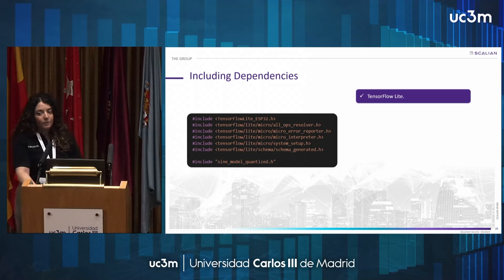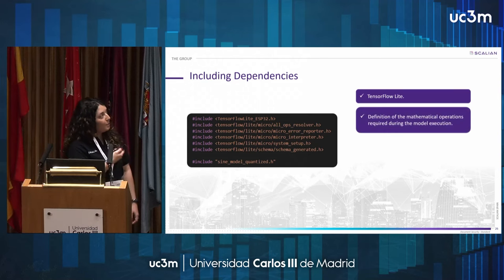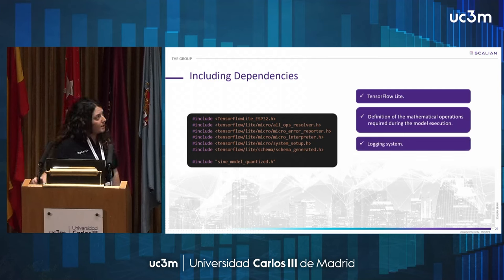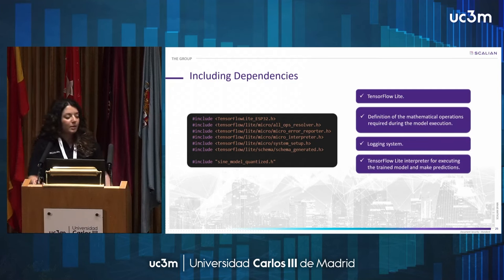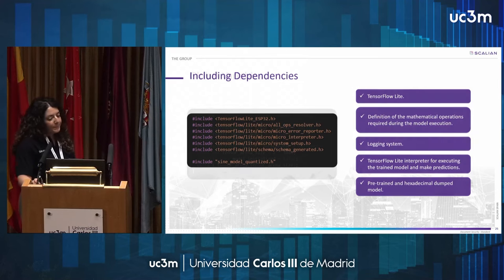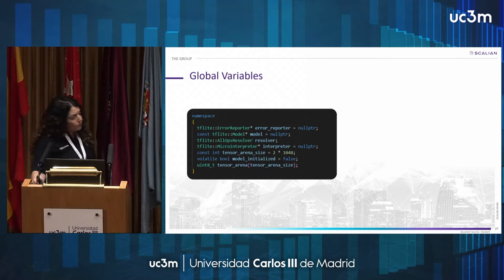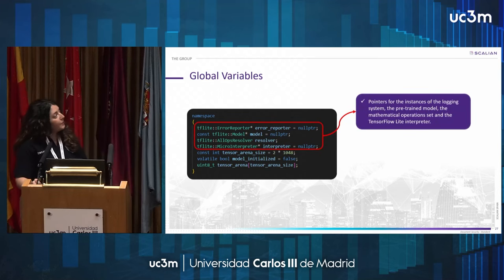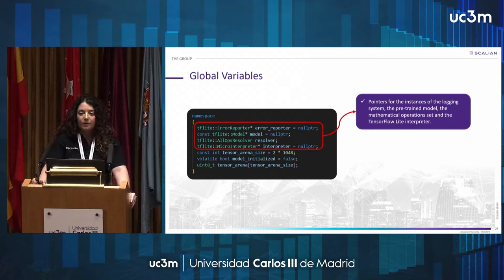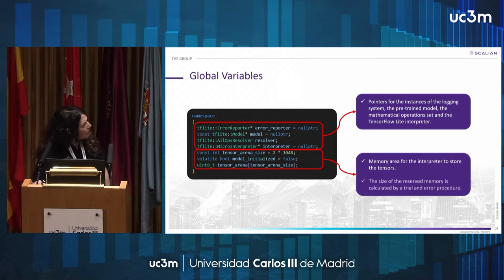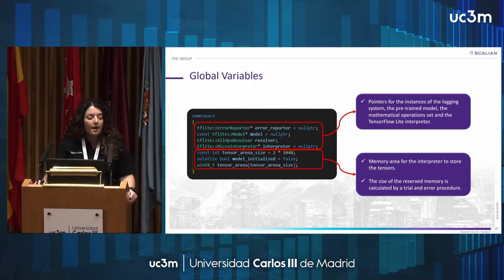Among the includes, we can highlight the following: the dependencies for TensorFlow Lite, the definitions of mathematical operations required for model execution, the dependencies for the logging system, the dependencies for the TensorFlow Lite interpreter for executing the trained model and making predictions, and the dependencies for the pre-trained hexadecimal dump model. Once the dependencies are included, we define a namespace with the following global variables: a pointer to the logging system instance, the pre-trained model, the mathematical operation set, the TensorFlow Lite interpreter, a memory area for the interpreter to store tensors, and the size of the reserved memory calculated by a trial-and-error procedure.